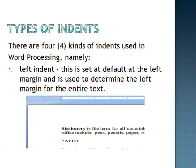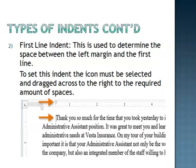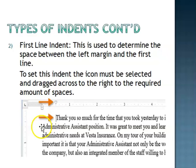Next we're going to look at the first line indent. This is used to determine the space between the left margin and the first line. To set this indent, the icon must be selected and dragged across to the right to the required amount of spaces. Here I have a diagram showing that — the first line of the text is indented and the marker is set at 0.5 inches. So the first line is indented at 0.5 inches, which is the main aim of the first line indent: to indent the first line of text.